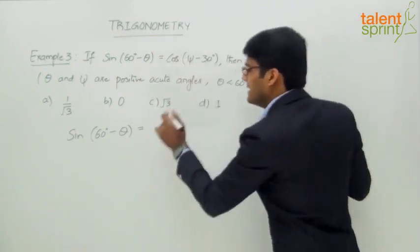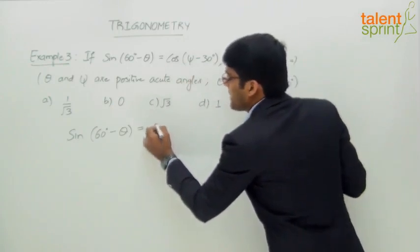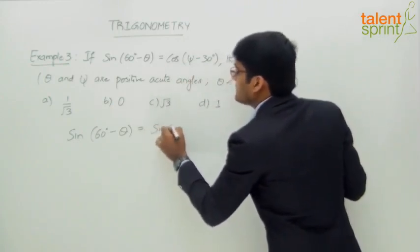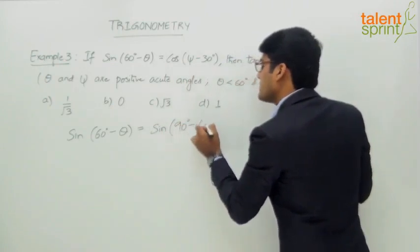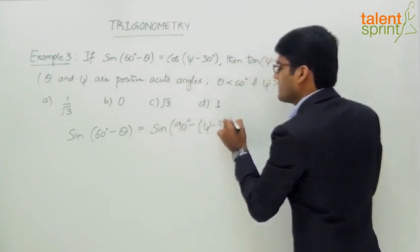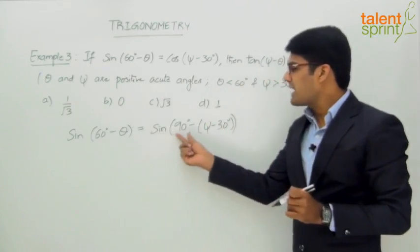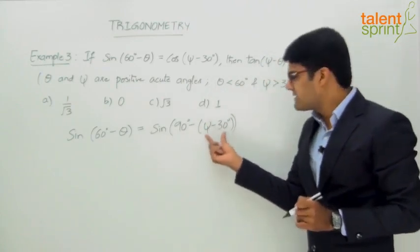...ψ - 30 can be taken as sin(90° - (ψ - 30°)). If you look at it, sin(90° - (ψ - 30°))—let us say this is one angle...